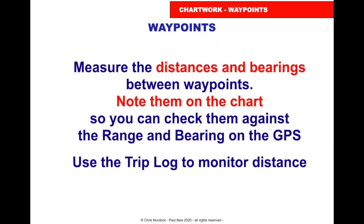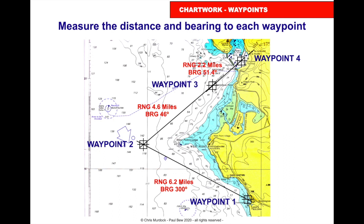Measure the distances and bearings between the waypoints and note them on the chart, so you can check them against the range and bearing on the GPS. Use the trip or distance log — we've covered that in one of our tutorials — to monitor the distance as you go between the waypoints. With the waypoints on your chart, you'd know, for example, going from waypoint one to waypoint two: the range is 6.2 miles and the bearing is 300 degrees.